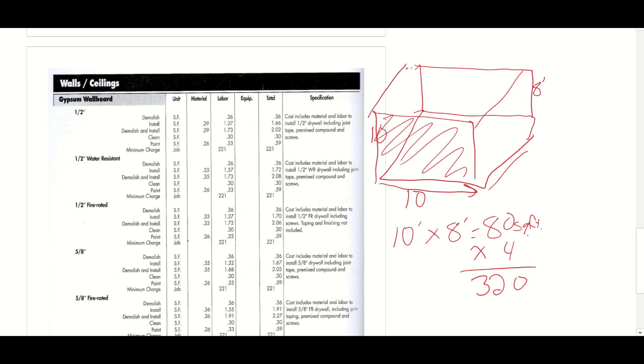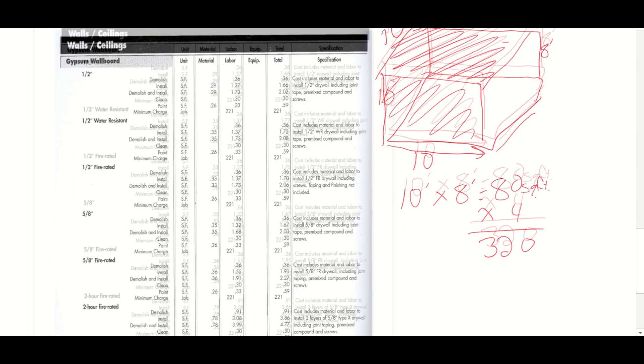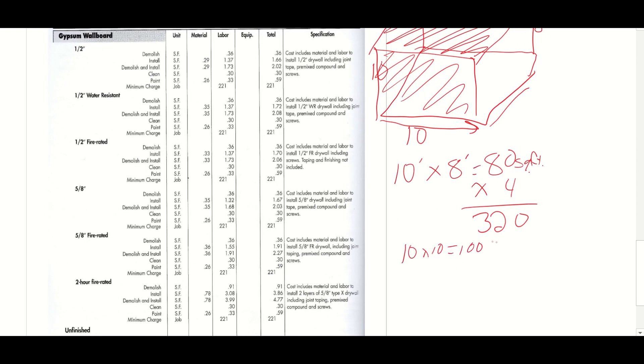My other wall is also 10 feet long by eight feet tall. So that will be 80. So I will have a total of four walls that are 80 square feet each. 8 times 4 is 320. Carry the zero. So I have 320 square feet of wall, but I'm not done.